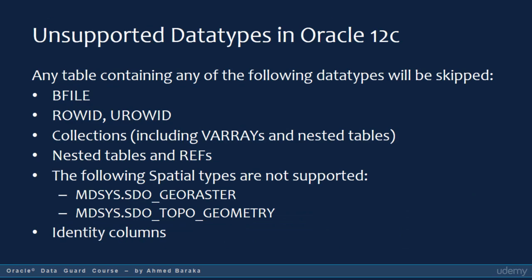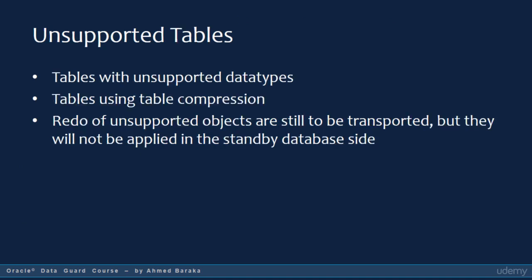Any table containing the following data types will be skipped: BFILE, ROWID or UROWID, all collection data types like VARRAY and nested tables, nested tables and REFs, spatial types, and identity columns. Tables using table compression will also be skipped. The redo of unsupported objects is still transported to the standby database, but will not be applied there.